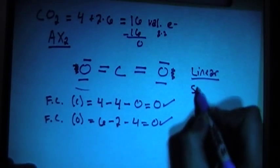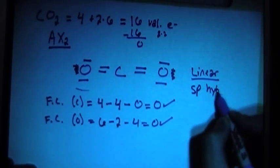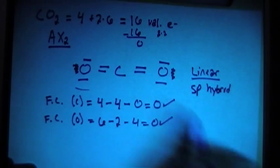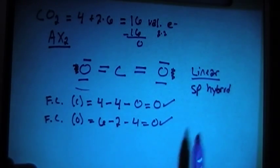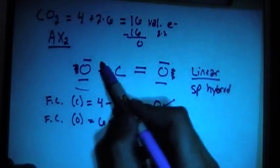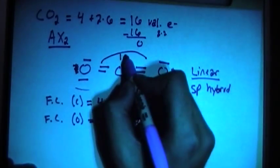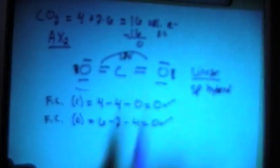So that's going to be SP hybrid orbitals for the carbon. And the bond angles of this molecule is going to be 180 degrees.